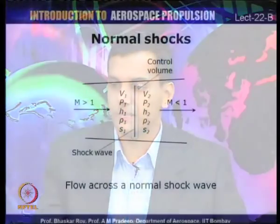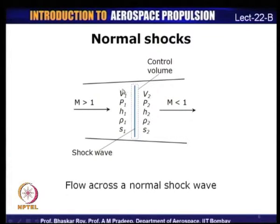Since Mach number is changing — the downstream Mach number becomes subsonic — velocity also changes. We shall analyze shortly what other properties change across the shock and how to correlate properties downstream with those upstream. Here we have flow through a generic duct, and the blue line indicates the shock wave — a normal shock with a very thin control volume surrounding it. Upstream of the shock (supersonic) we have velocity V₁, pressure P₁, static enthalpy H₁, density ρ₁, and entropy S₁. Downstream (subsonic) we have V₂, P₂, H₂, ρ₂, and S₂.